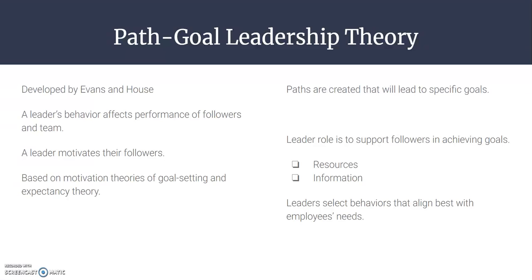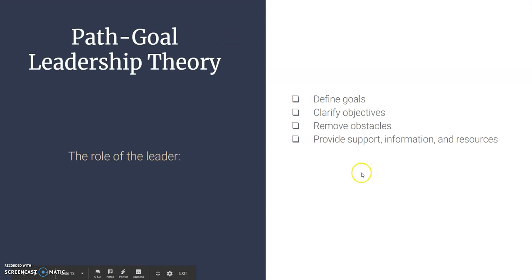The path-goal theory asks: what are your employees' needs, what are the goals, and how can the leader help followers accomplish them? The leader's role involves defining goals, clarifying objectives, removing obstacles, and providing support, information, and resources along the path to success.